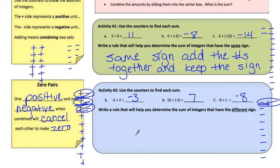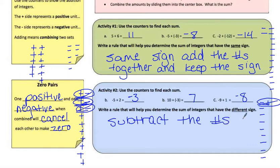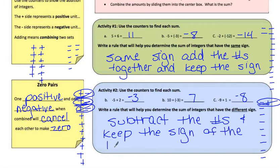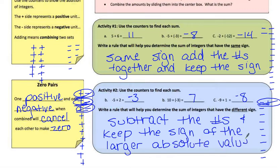Write a rule to help you determine the sum of integers with different signs: subtract the numbers and keep the sign of the larger absolute value. So 5 minus 2 gives 3, and 5 has a larger absolute value so it's negative. Same with the 10 example — 10 has a larger absolute value so it's positive. And 9 has a larger absolute value so it's negative.